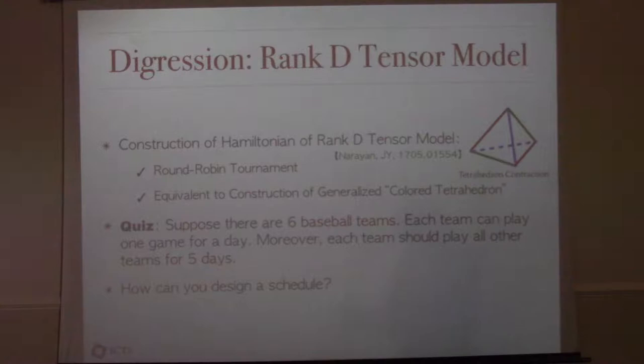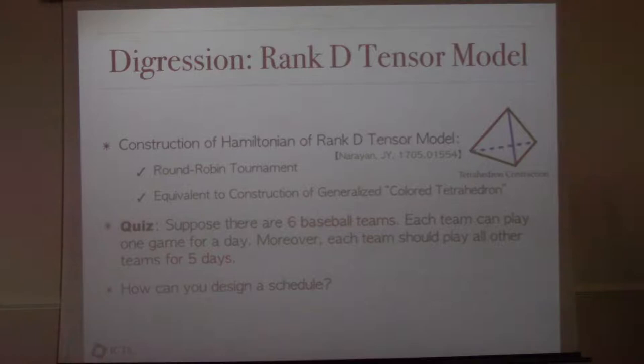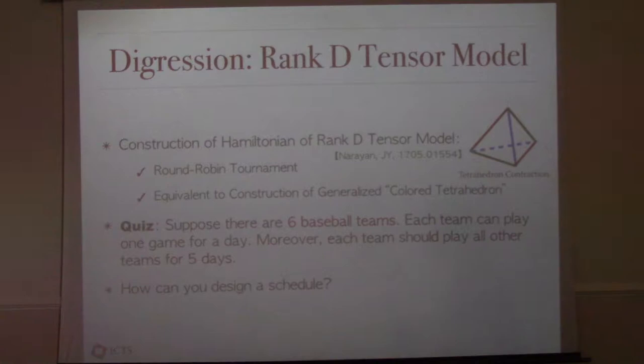One can consider the rank-D tensor model. The reason to consider rank-D is that it is related to the large-Q limit of the SYK model. The difficulty of the rank-D tensor model is how to construct the Hamiltonian, but we found a very interesting way to do so. For rank-3, the Hamiltonian is represented by a tetrahedron, and for rank-D it is equivalent to constructing a generalized colored tetrahedron.